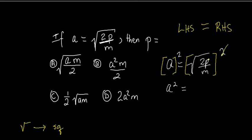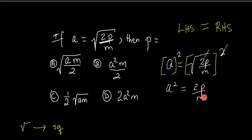This square cancels out with the square root, leaving us with just 2P over M. Now I need to see what's affecting everything else on this side. We have division and also multiplication. The M is dividing 2P, and 2 is multiplying P. Since 2 is only multiplying P — it's not multiplying M — I'll get rid of M first, since M is dividing both 2 and P.